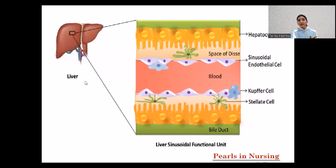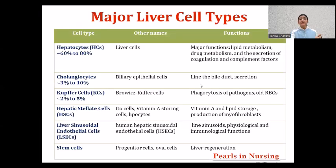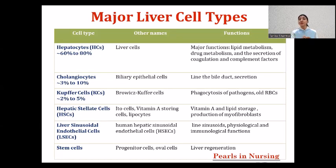The liver has various cell types with different functions. Hepatocytes are the major liver cells, constituting 60 to 80% of all liver cells. Their main functions include metabolizing lipids and drugs, and secreting coagulation and complement factors. Cholangiocytes, also known as biliary epithelial cells, constitute about 3 to 10% of liver cells. They line the bile duct and secrete bile.